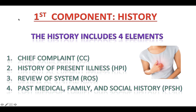The first component is the history. The history includes four elements: the first element is chief complaint (CC); the second element is history of present illness (HPI); the third element is review of systems (ROS); and the fourth element is past medical, family, and social history (PFSH).